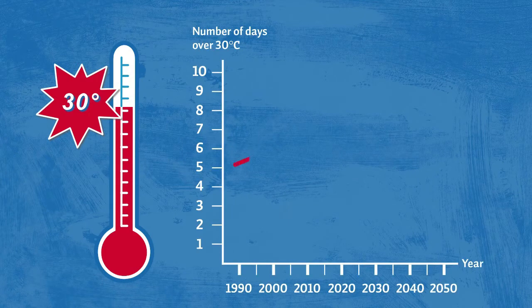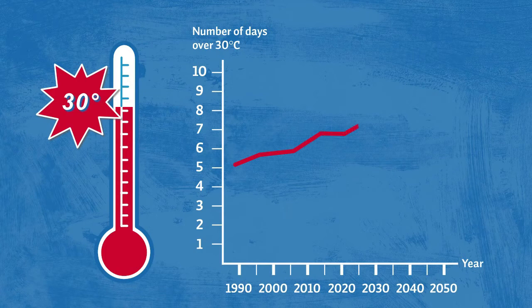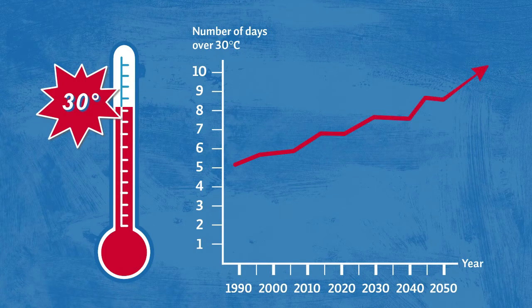Temperatures show a clear trend. Summers are getting hotter. In 1990, an average of five days saw temperatures over 30 degrees Celsius. In 2050, it could be twice as many.